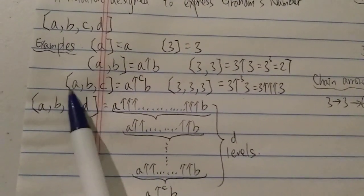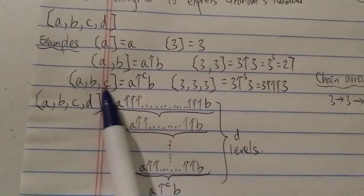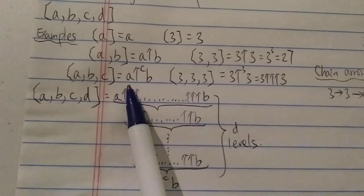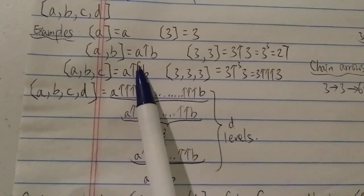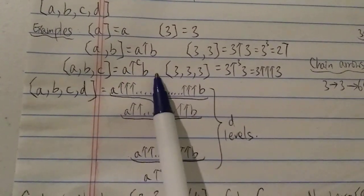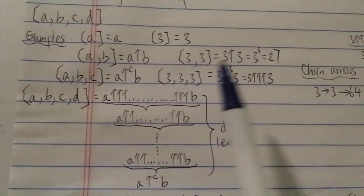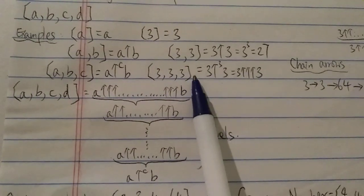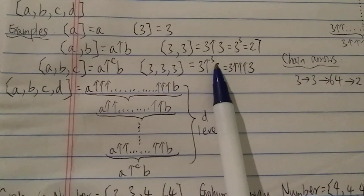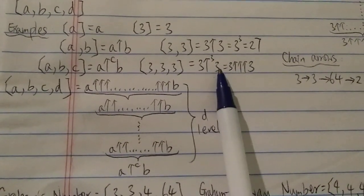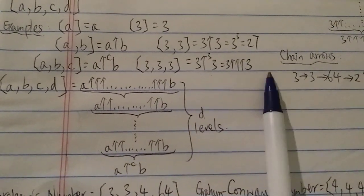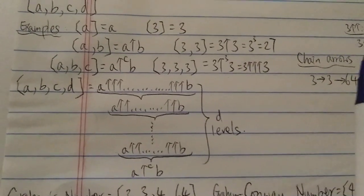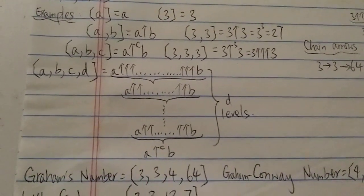If you have three terms, A, B, C in a bracket, then it means A with C number of up arrows B. So in this case, [3,3,3] would mean three with three arrows three — that is three triple-arrow three. Very straightforward again.